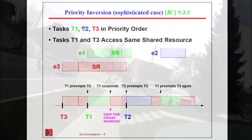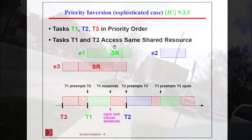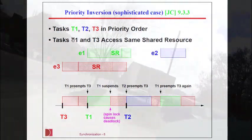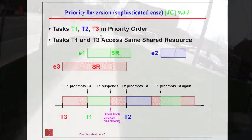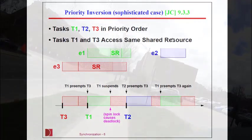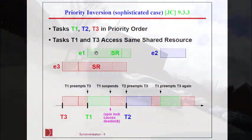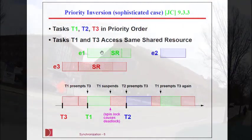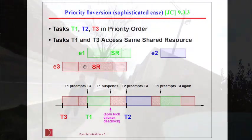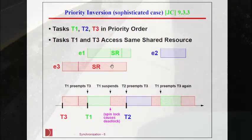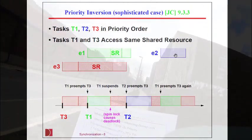This is really what we mean by priority inversion, when a lower priority task can actually preempt a higher priority task. Here's how it can happen. Imagine that we have three tasks: task one, task two, and task three. Those are in priority order. Task one has the highest priority, task two is medium priority, and task three is low priority. If task one, the highest priority task, and task three, the lowest priority task, both access the same shared resource, look what can happen.